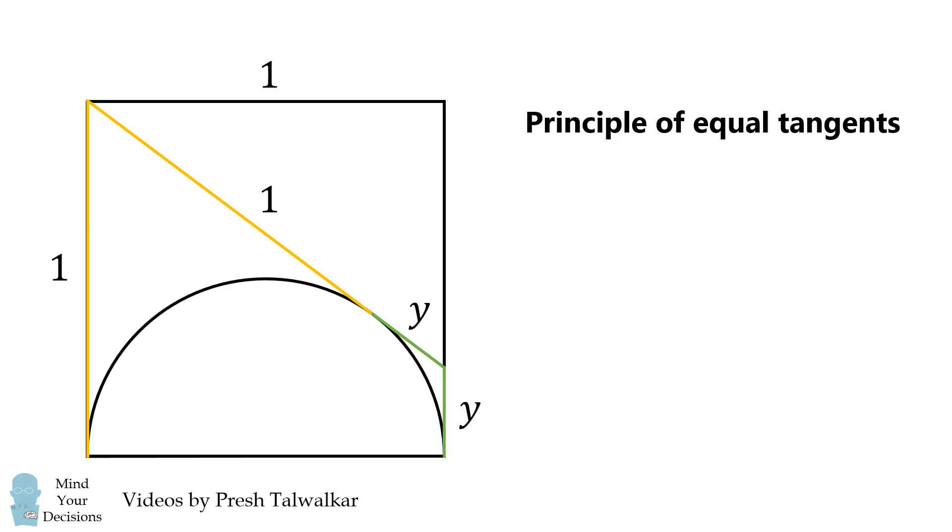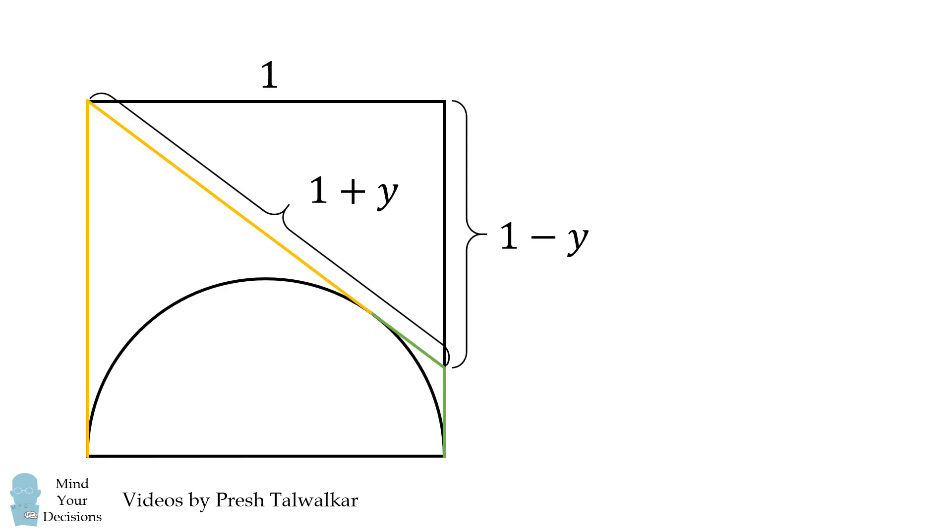Since this portion of the side of the square has a length of Y, the remaining portion of this side will be 1 minus Y, because the entire side of the square is equal to 1. The hypotenuse of this right triangle will be 1 plus Y.